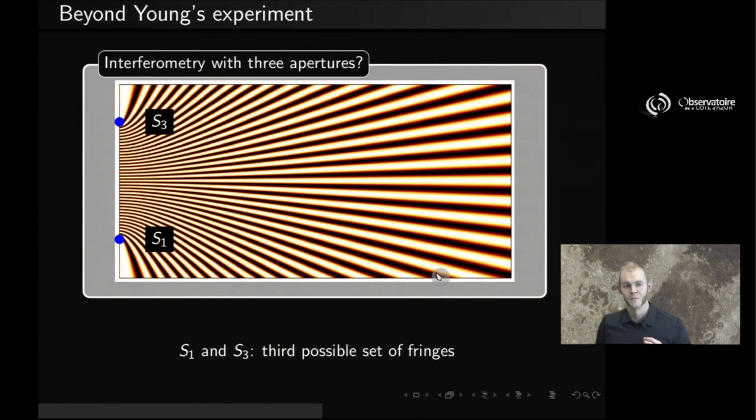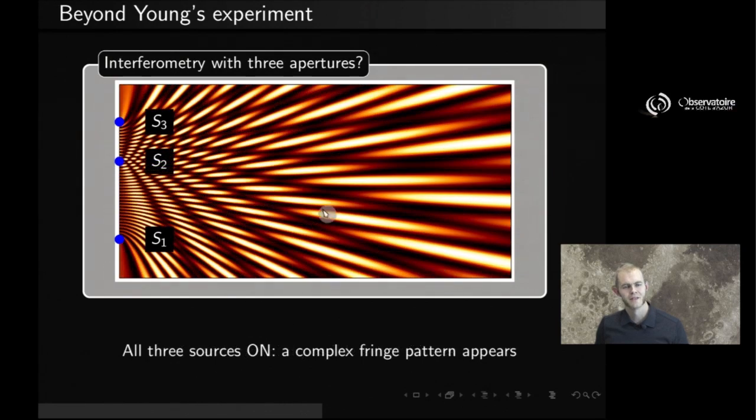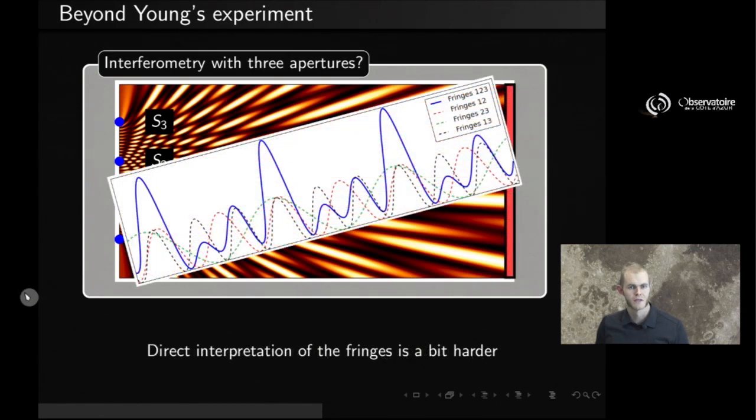Now, if you turn all three sources on at the same time, you get a fringe pattern that is slightly more complicated to interpret. You get some structures that do repeat themselves, some kind of periodic structure, but not so trivial to interpret. And if you were to do just like what we did earlier, cut a slice of the intensity along this axis, you would measure something like this. The solid blue curve you see here is the curve of that intensity profile measured in the far field away from the three sources. So clearly not something that you would be able to interpret right on the fly.